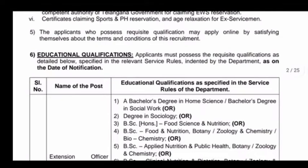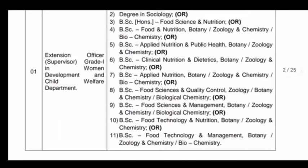If you want to choose education details, you can choose B.Sc. If you want to choose science, you can choose B.Sc. with subjects like Chemistry, Applied Nutrition, Food Technology, Management, etc.